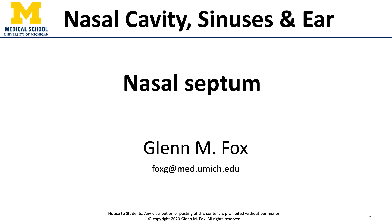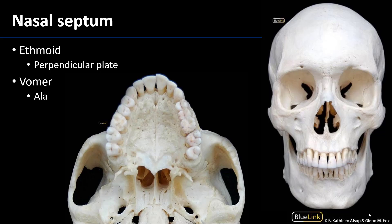Hi, let's talk about the nasal septum. The nasal septum is the physical structure which divides the left from the right nasal cavity, and it consists of three parts: the ethmoid, the vomer, and the septal cartilage.